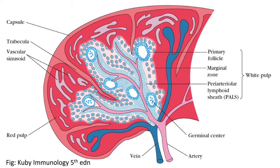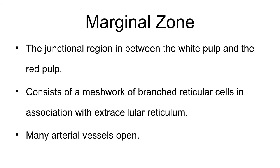After the antigenic challenge, the primary follicle gets converted into the secondary follicle. Within the secondary follicle, activated B cells proliferate and differentiate into memory cells and plasma cells. The plasma cells that are formed leave the germinal center and enter the marginal zone, where they start secreting a large number of antibodies which are carried by the veins to the heart and circulated throughout the body. The marginal zone is basically the junction between the white pulp and the red pulp, which consists of a network of branched reticular cells in association with the extracellular reticulum.